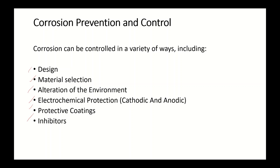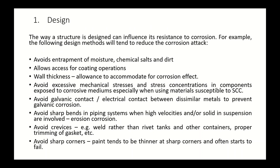All these methods will be discussed. These are the methods that can be used to control the corrosion process of metals. The first method is through design. The way a structure is designed can influence its corrosion resistance. If you properly design the object or the structures of an item, you can increase the corrosion resistance of that object. For example, the following design methods will tend to reduce the corrosion attack.